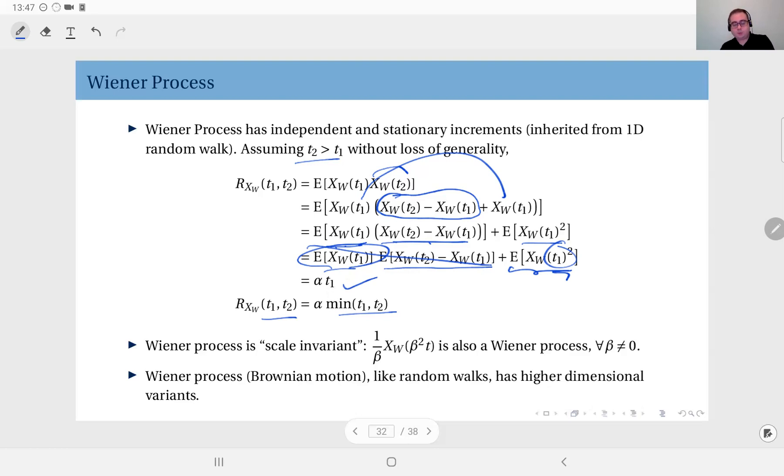Another property of the Wiener process is it's scale invariant. If you scale the time by beta squared and scale the value of the process by one over beta, what you end up with is still a Wiener process, for beta non-zero. A final point about the Wiener process or Brownian motion: we have studied the one-dimensional case, but it also has two-dimensional, three-dimensional, and in fact more dimensional variants. You have two-dimensional Brownian motion, three-dimensional Brownian motion in a volume, and so on.